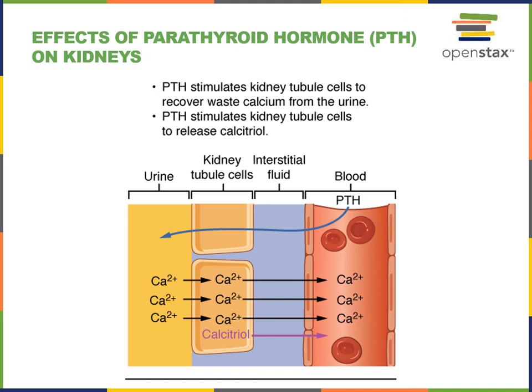Parathyroid hormone stimulates reabsorption of calcium in the distal convoluted tubule. It is secreted by the parathyroid gland in response to low blood calcium concentrations, also known as hypocalcemia. Parathyroid hormone binds to receptors on cells in the distal convoluted tubule, stimulating calcium reabsorption and also stimulating the activation of vitamin D to the calcitriol form. Calcitriol then functions as a hormone that stimulates calcium absorption in the intestines.